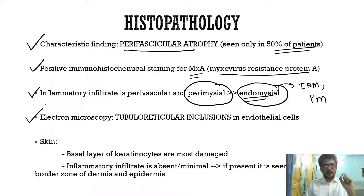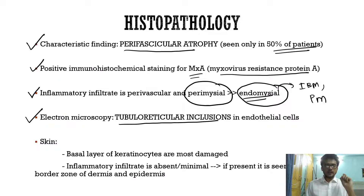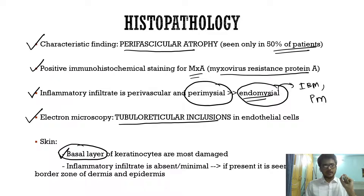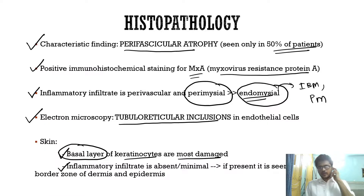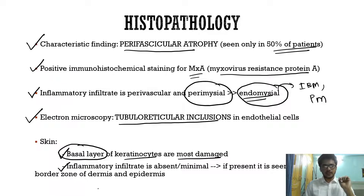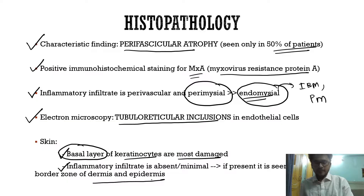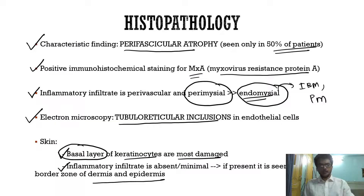On electron microscopy, tubular reticular inclusions can be seen in the endothelial cells. On skin biopsy, the basal layer of keratinocytes is most damaged, and the inflammatory infiltrate is usually absent or minimal, but if present it is seen at the dermo-epidermal junction. This covers the key points of dermatomyositis.